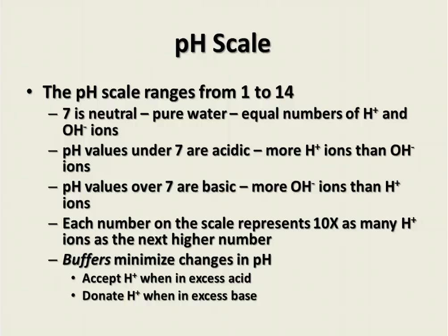There are solutions called buffers which minimize changes in pH. When there is excess acid, they accept hydrogen ions; when there is excess base, they donate hydrogen ions. This keeps the numbers relatively equal, preventing sharp sudden changes in pH and allowing only very slight changes, which are much less harmful to the organism. This concludes the notes on pH and water.